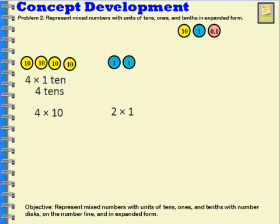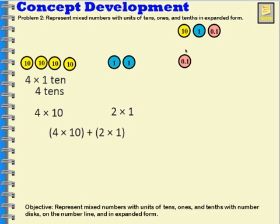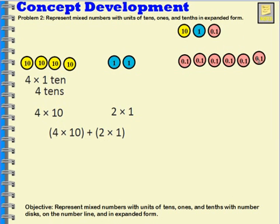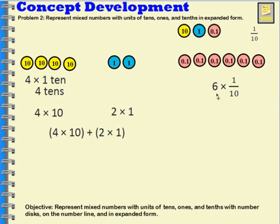I can put these together: multiply four times ten and multiply two times one, then add those together. Now let's add six tenths disks. This represents one tenth, six times — so six times one tenth, which is six tenths. So over here I have four times ten, that's forty; here I have two times one, that's two; and over here I have six times one tenth, which is six tenths.